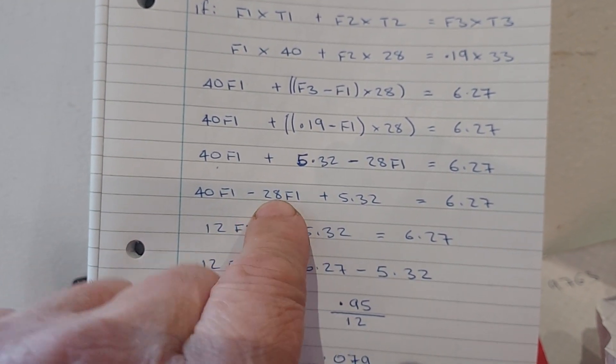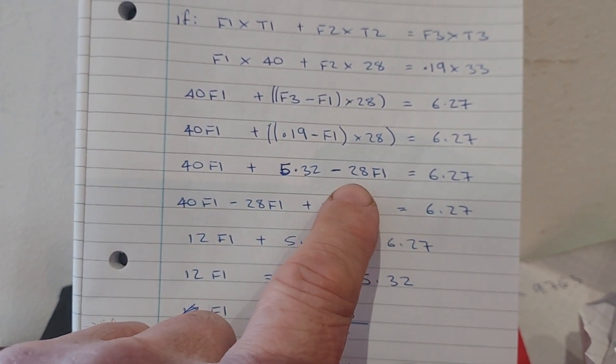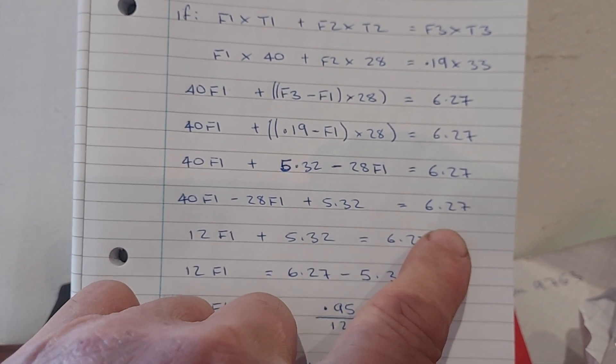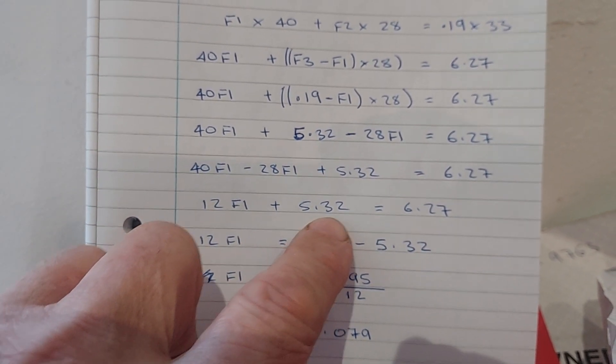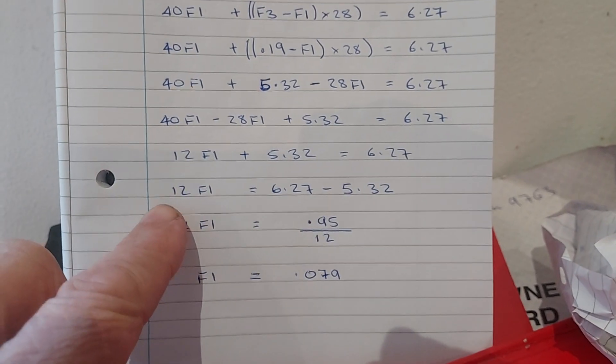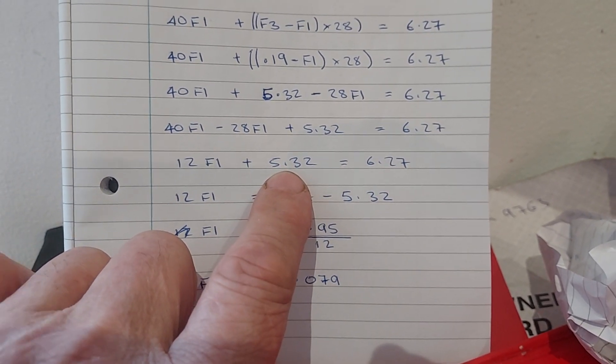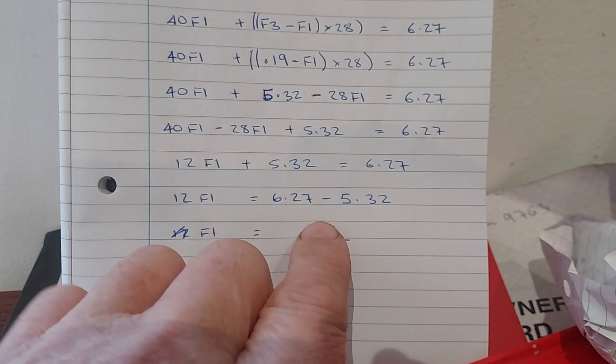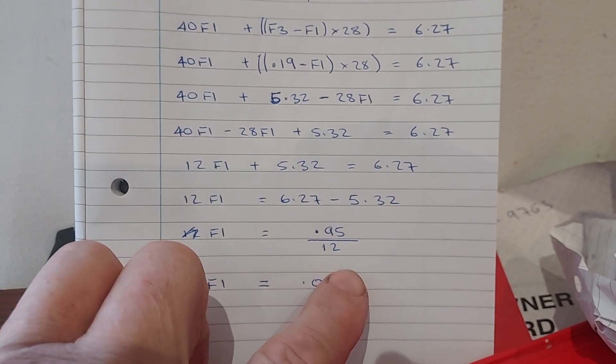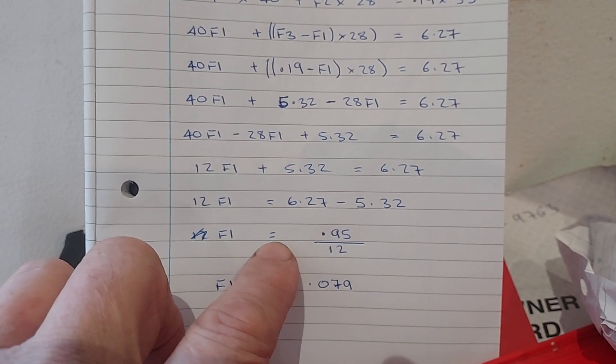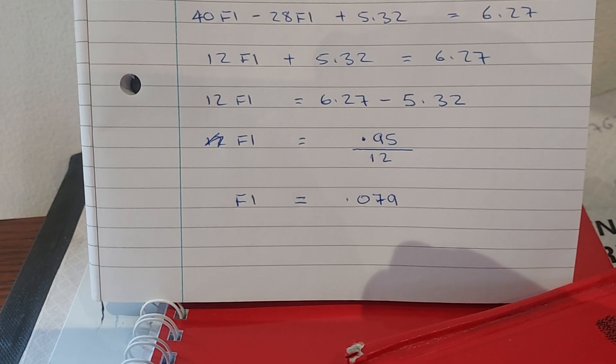The next line, 40F1 minus 28F1. Simply here, we've just transferred this across and we're going to reduce the 40 by the 28 plus 5.32 equals 6.27. 40 minus 28 gives us 12. So it's 12F1 plus 5.3 equals 6.27. Next line of our equation, 12F1 equals 6.27 minus 5.3. Here where we've got the plus 5.3, we've transferred it to the other side of our equation where it becomes a minus. Then we've solved that problem to get the value of 0.95. Here, we've got 12 times F1. If we divide this side by 12, we cancel out this 12. We get F1 equals 0.95 divided by 12, giving us our solution of F1 equals 0.079.